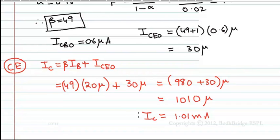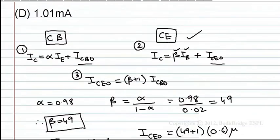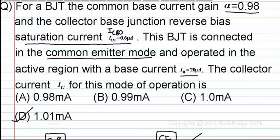That is nothing but 1.01 milliamperes. Therefore, IC is 1.01 milliamperes. This is milliamperes. Therefore, IC equals 1.01 milliamperes.